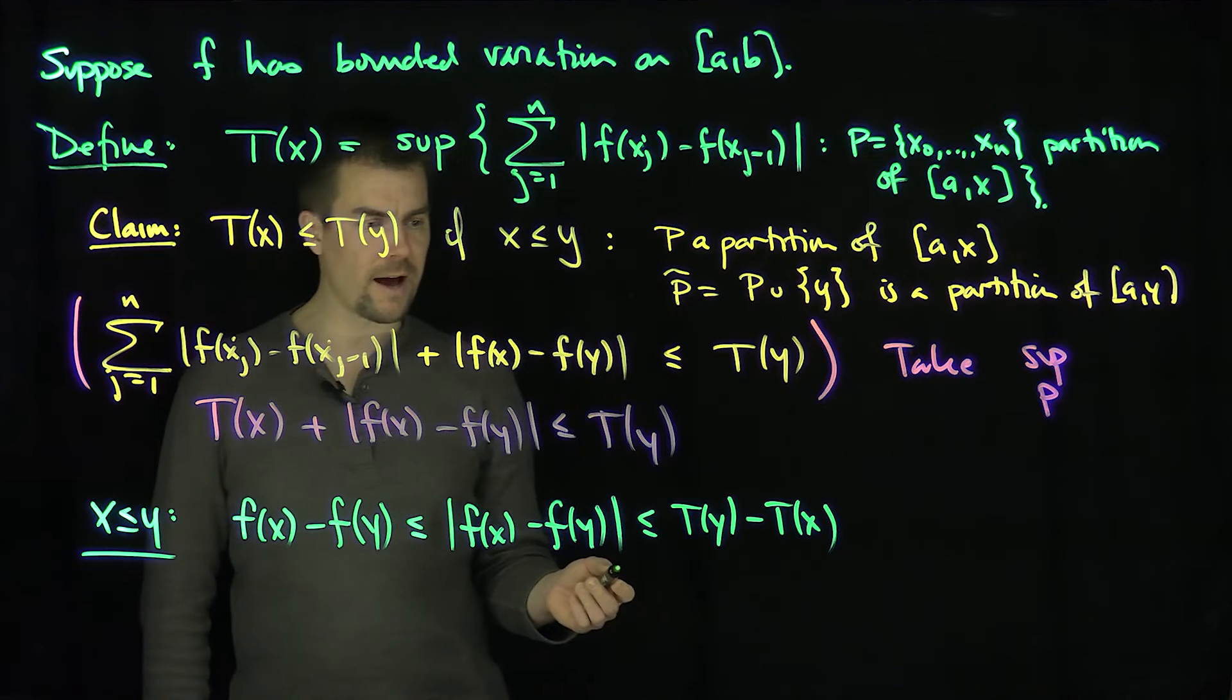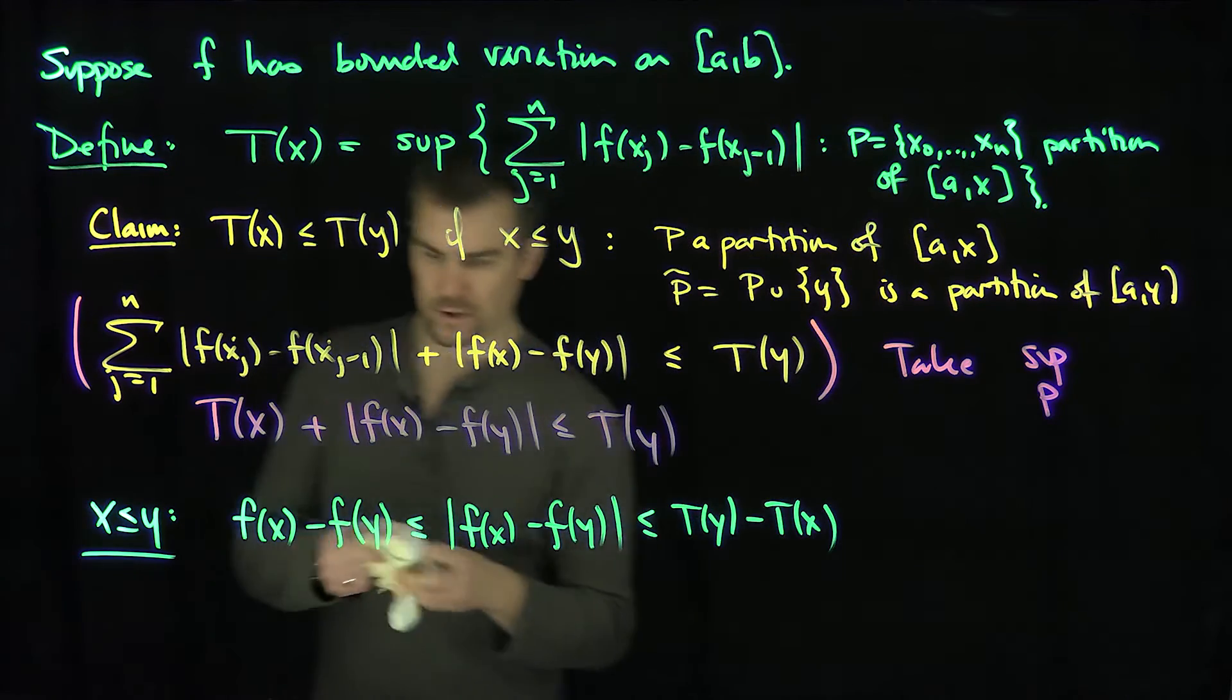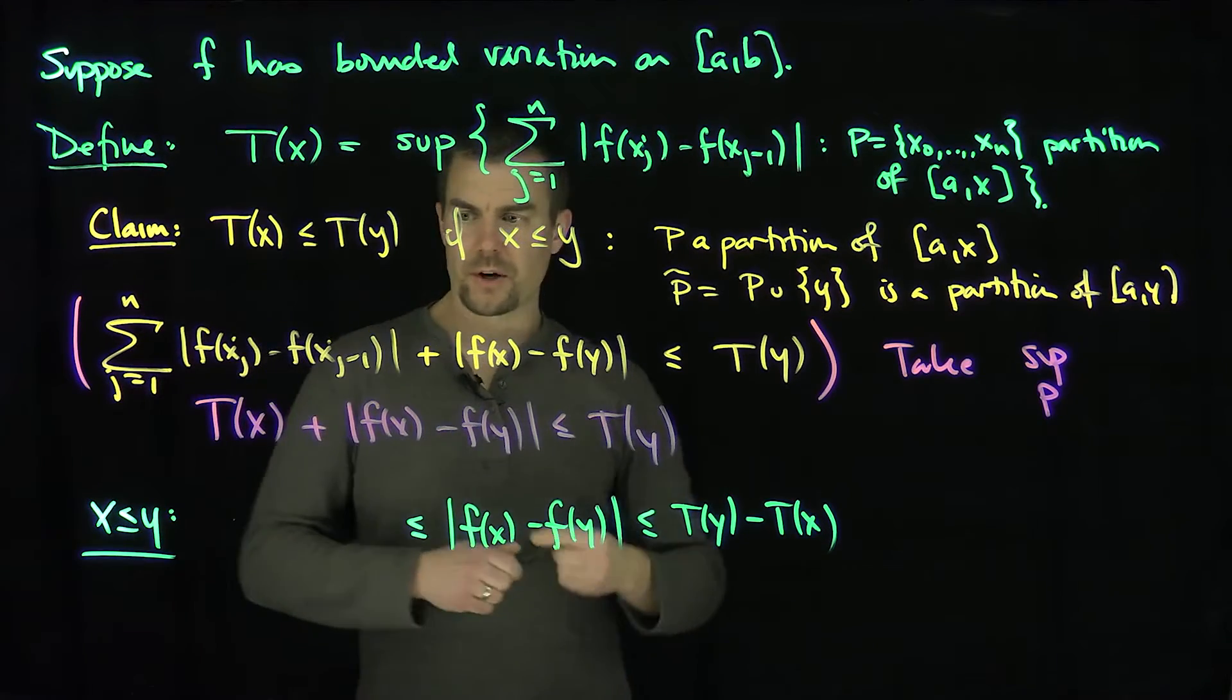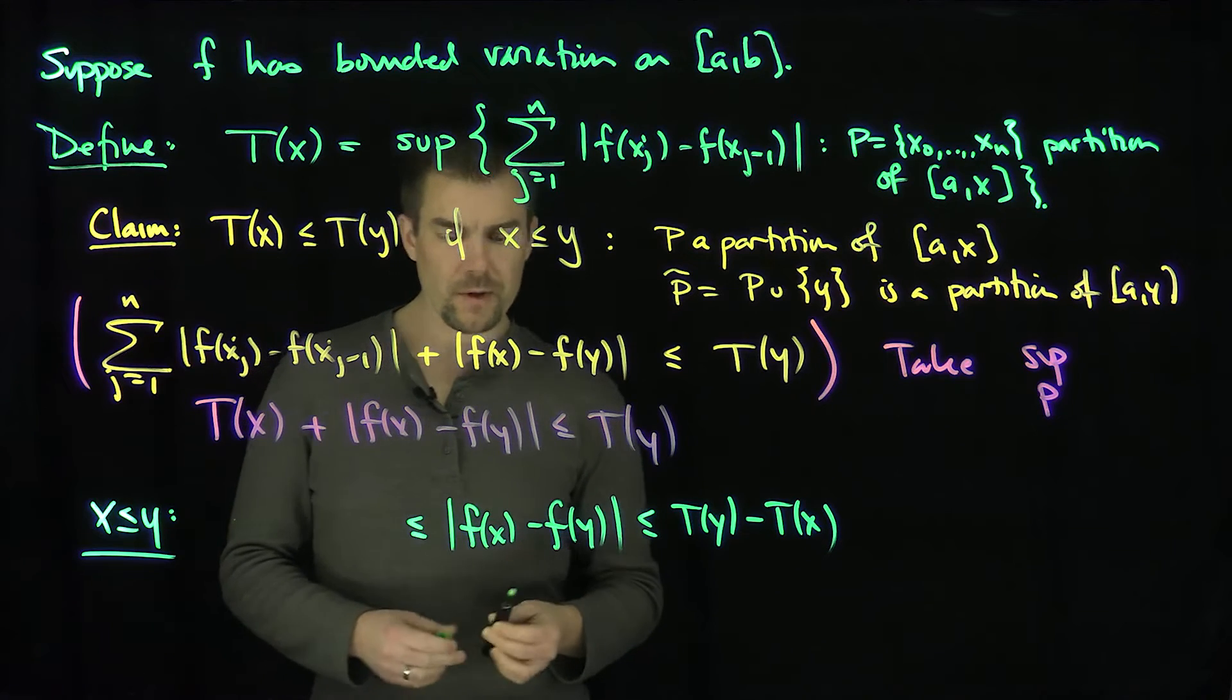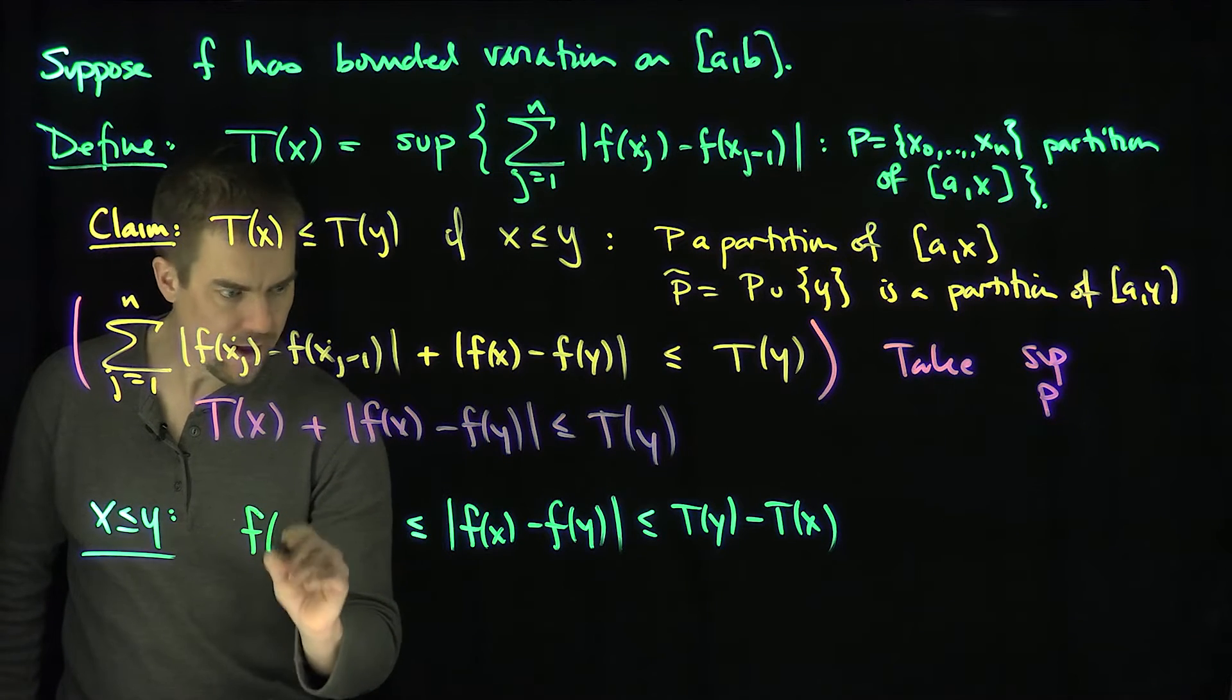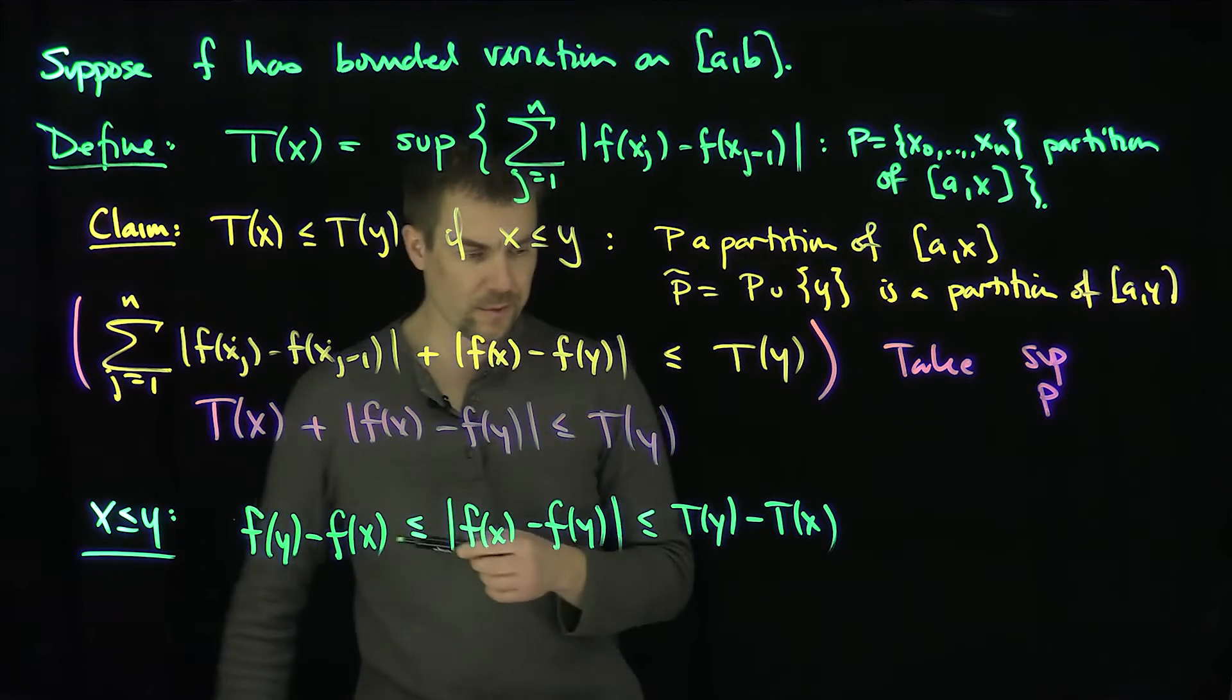If I rearrange this, I want to change this around a little bit. F of y minus F of x is certainly still true since this quantity is definitely less than its absolute value, because the absolute value of this thing is the same as the absolute value with reversed signs.